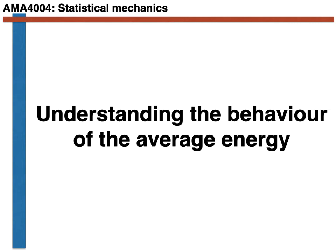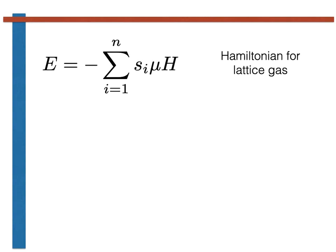In other videos, I have introduced various Hamiltonians for interacting and non-interacting two-level systems. The simplest of these is the Hamiltonian for the lattice gas, which is shown here.